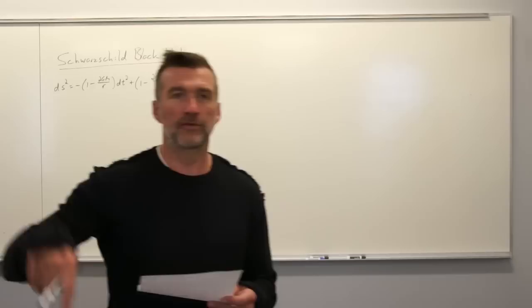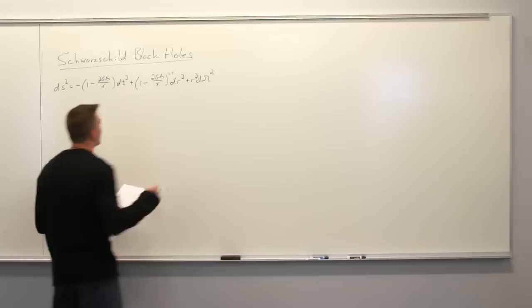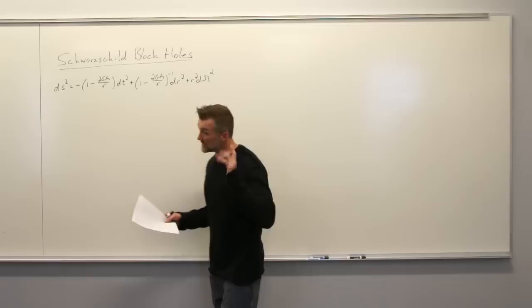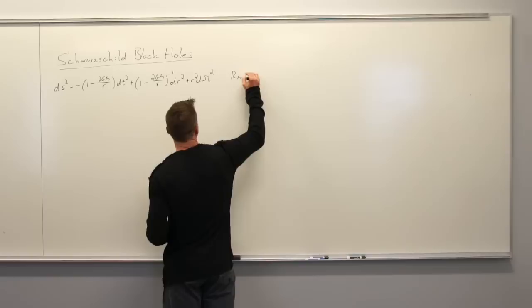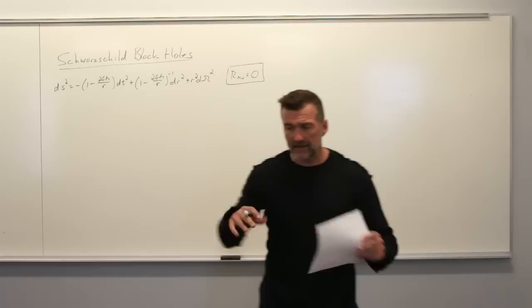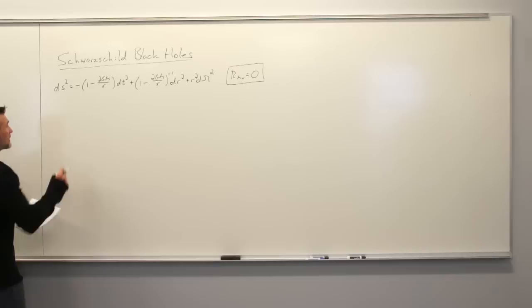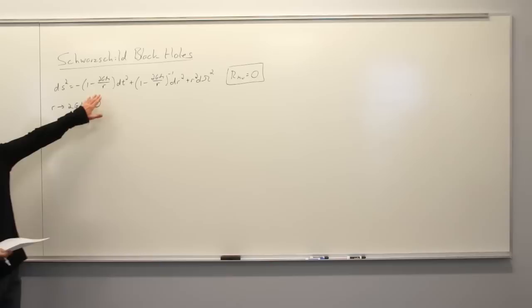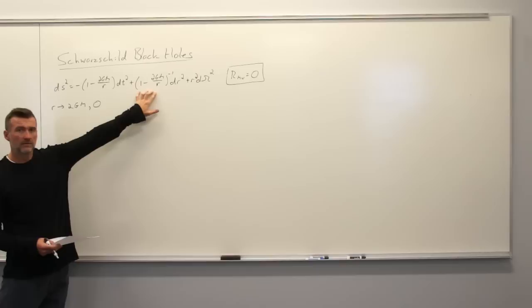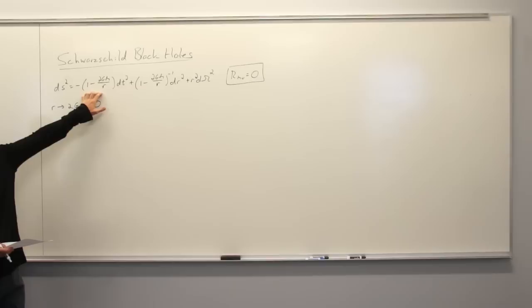Okay, I'm going to talk about black holes. So this is the Schwarzschild metric — it is the spherically symmetric solution to Einstein's equations in a vacuum, solving Einstein's equations when T-mu-nu is zero. This is the exterior solution for any spherically symmetric thing: it could be a star, a planet, or a black hole. Clearly something interesting is going on when r goes to 2GM — this quantity diverges. And when r goes to zero, this other quantity diverges. So we need to talk about what's happening at those two radii.